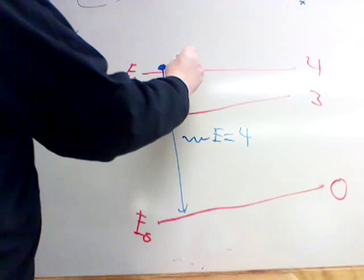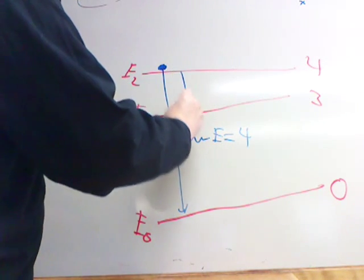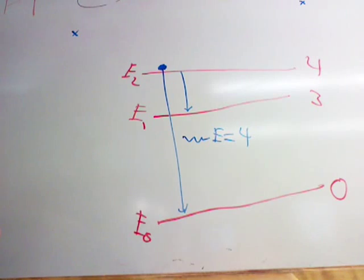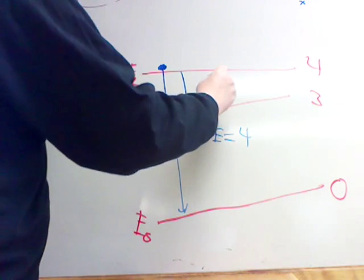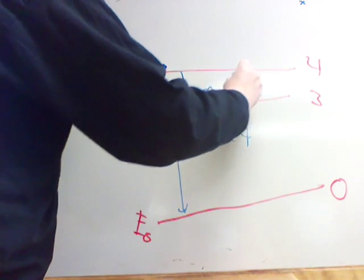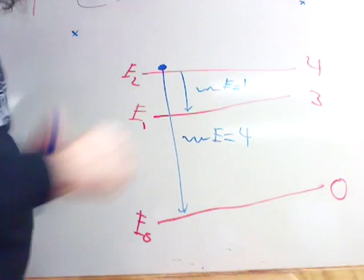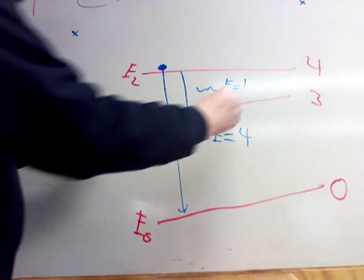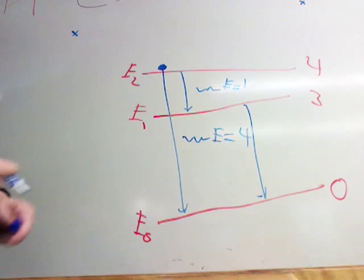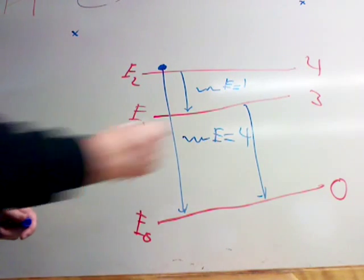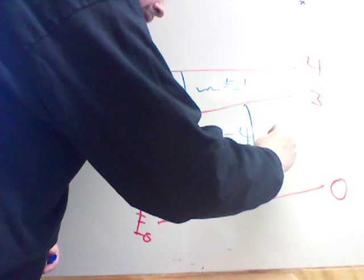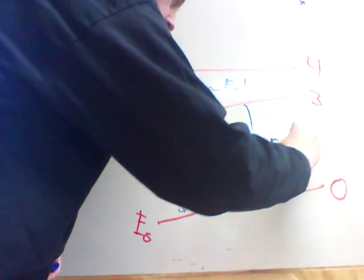Or, this electron could transition to the first excited state, which would produce a photon of energy equal one, because that's the energy level difference between four and three. And then, it could fall to the ground state, because it has to get to the ground state eventually, thereby emitting a photon of energy equal three.